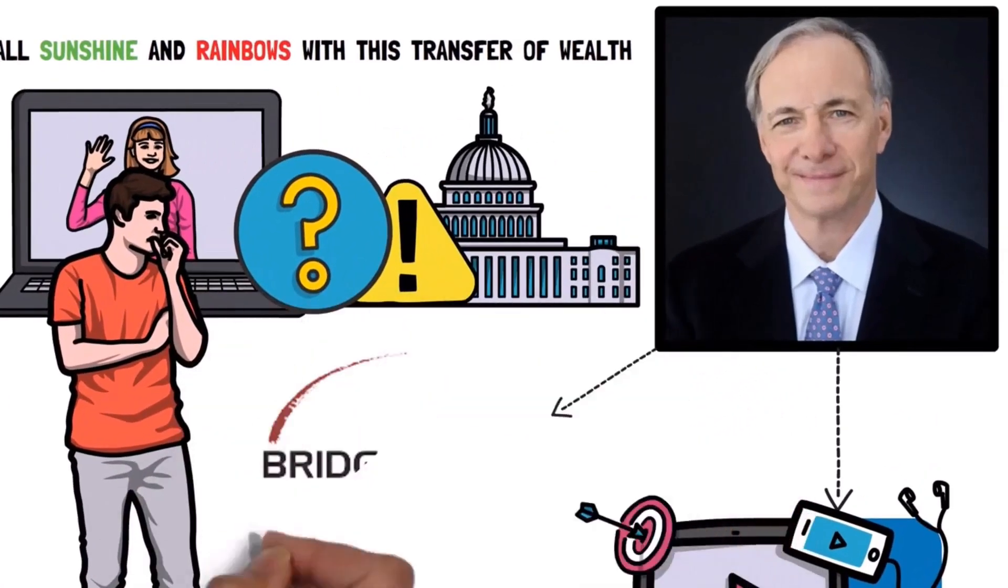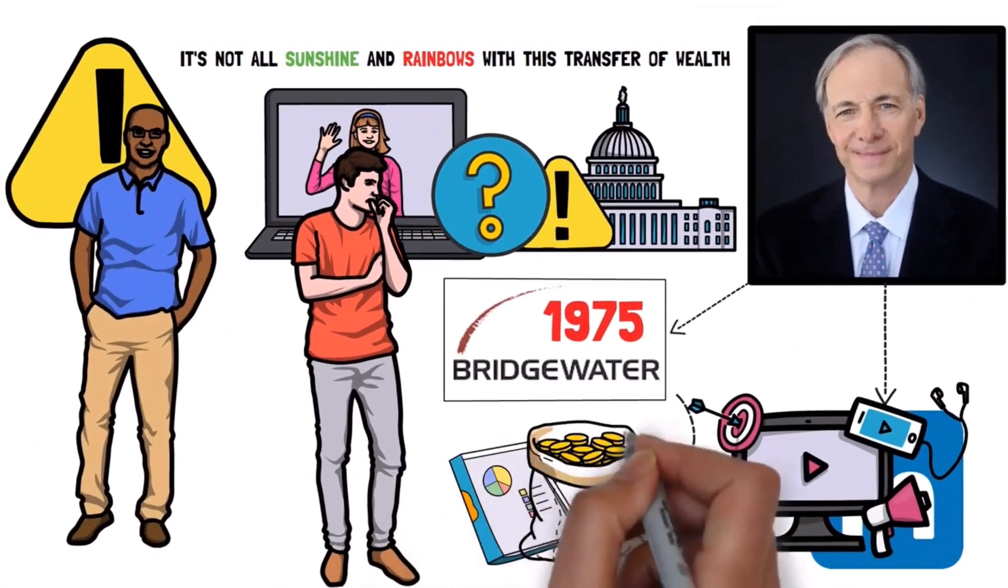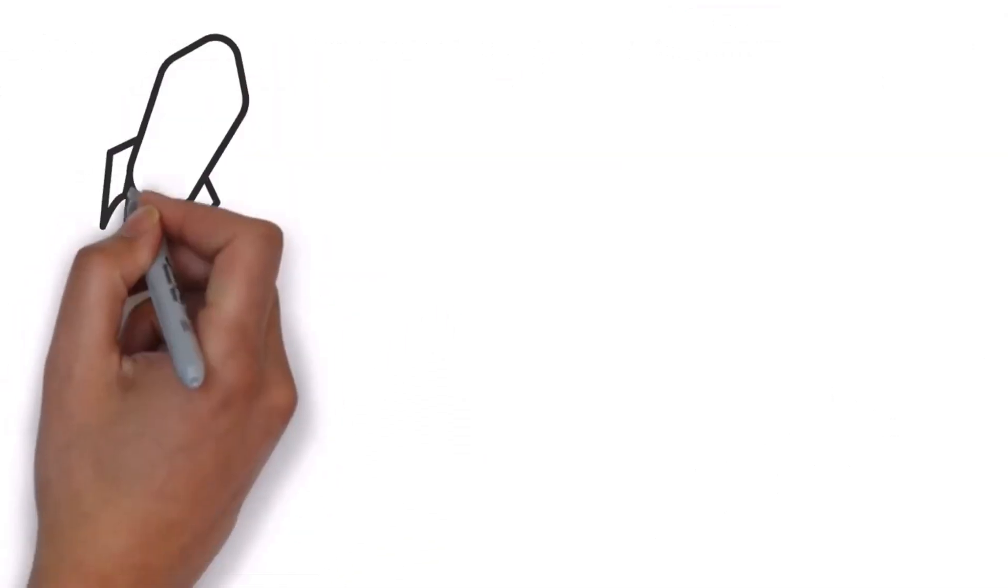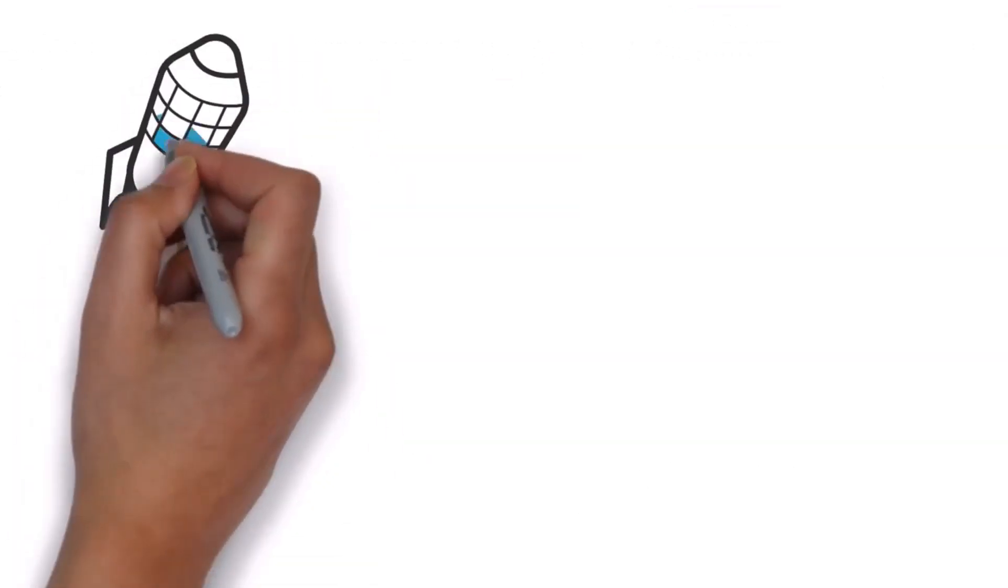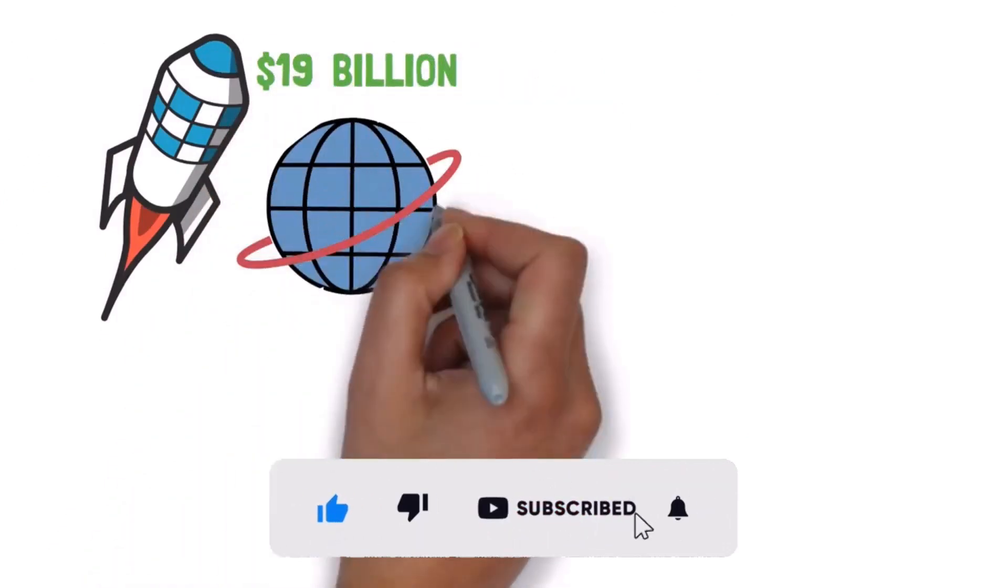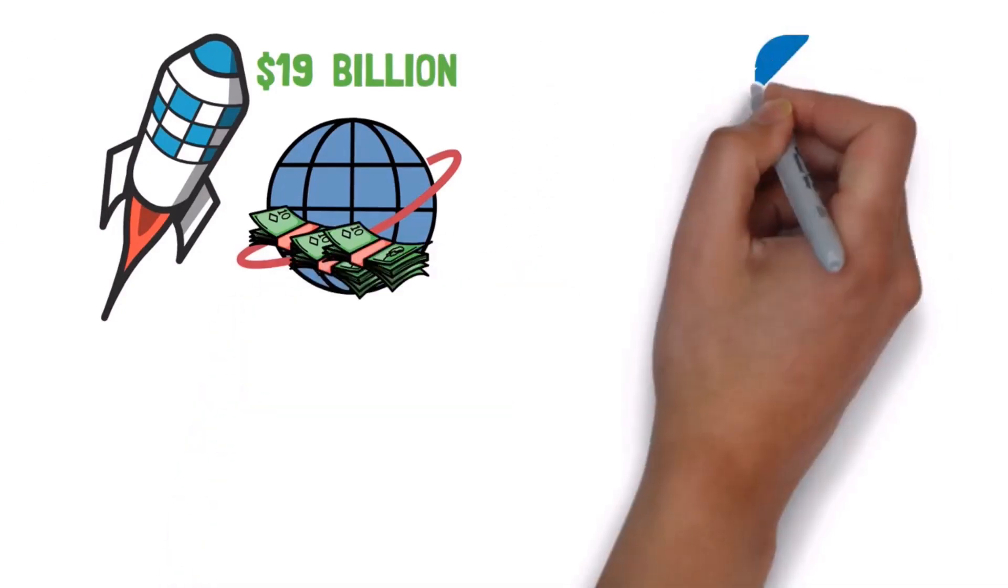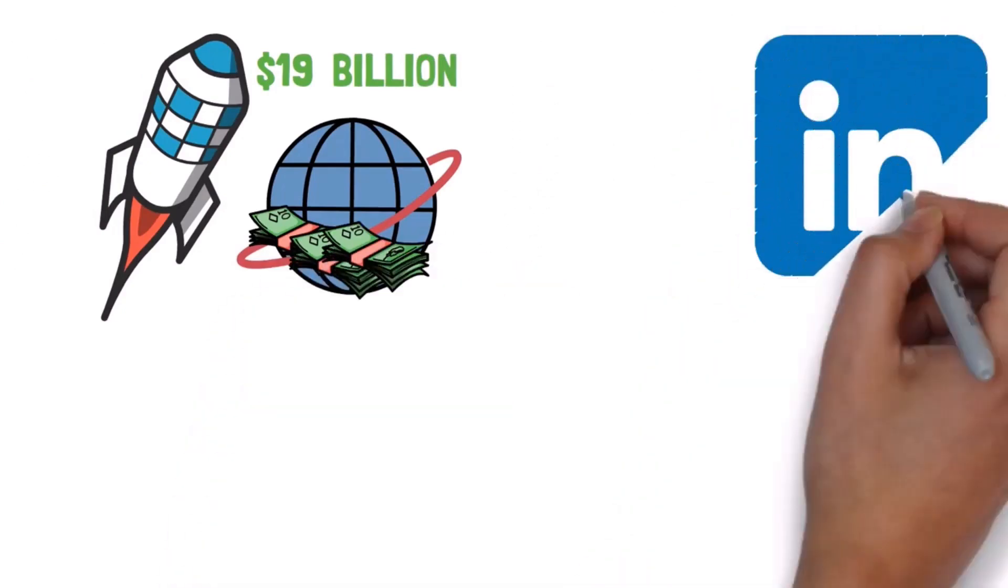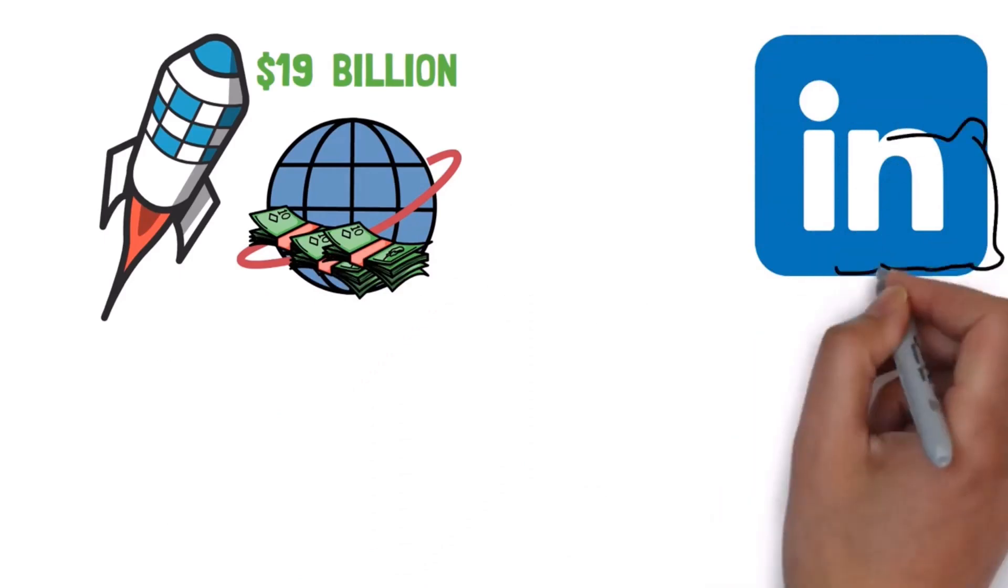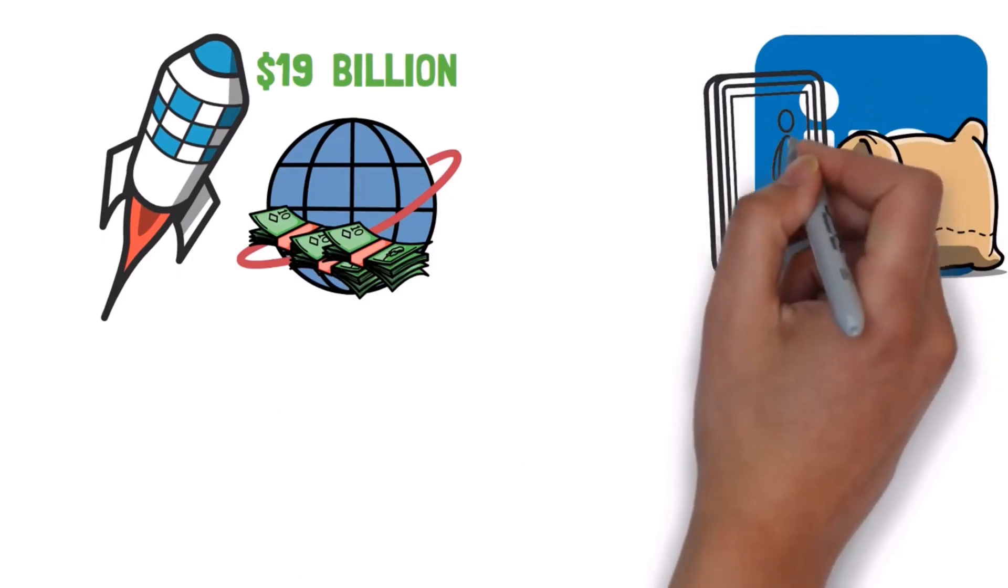Dalio founded Bridgewater Associates back in 1975, and today it stands as the world's largest hedge fund. Bridgewater's longstanding success skyrocketed Ray's net worth to over $19 billion and has established him as the world's most respected macroeconomic investor. And it's ultimately this respect that propelled a simple LinkedIn post about the economy into a viral media story published across all major news sites.